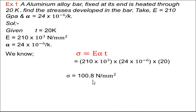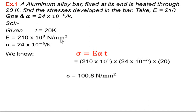I will read the problem first. An aluminum alloy bar fixed at its ends is heated through 20 degrees Celsius. Find the stresses developed in the bar. Given: E = 210 GPa and alpha, the coefficient of thermal expansion, is 24 × 10⁻⁶ per degree Celsius. So in this problem, temperature T = 20°C, E = 210 × 10³ N/mm² (MPa), and alpha = 24 × 10⁻⁶ per °C.